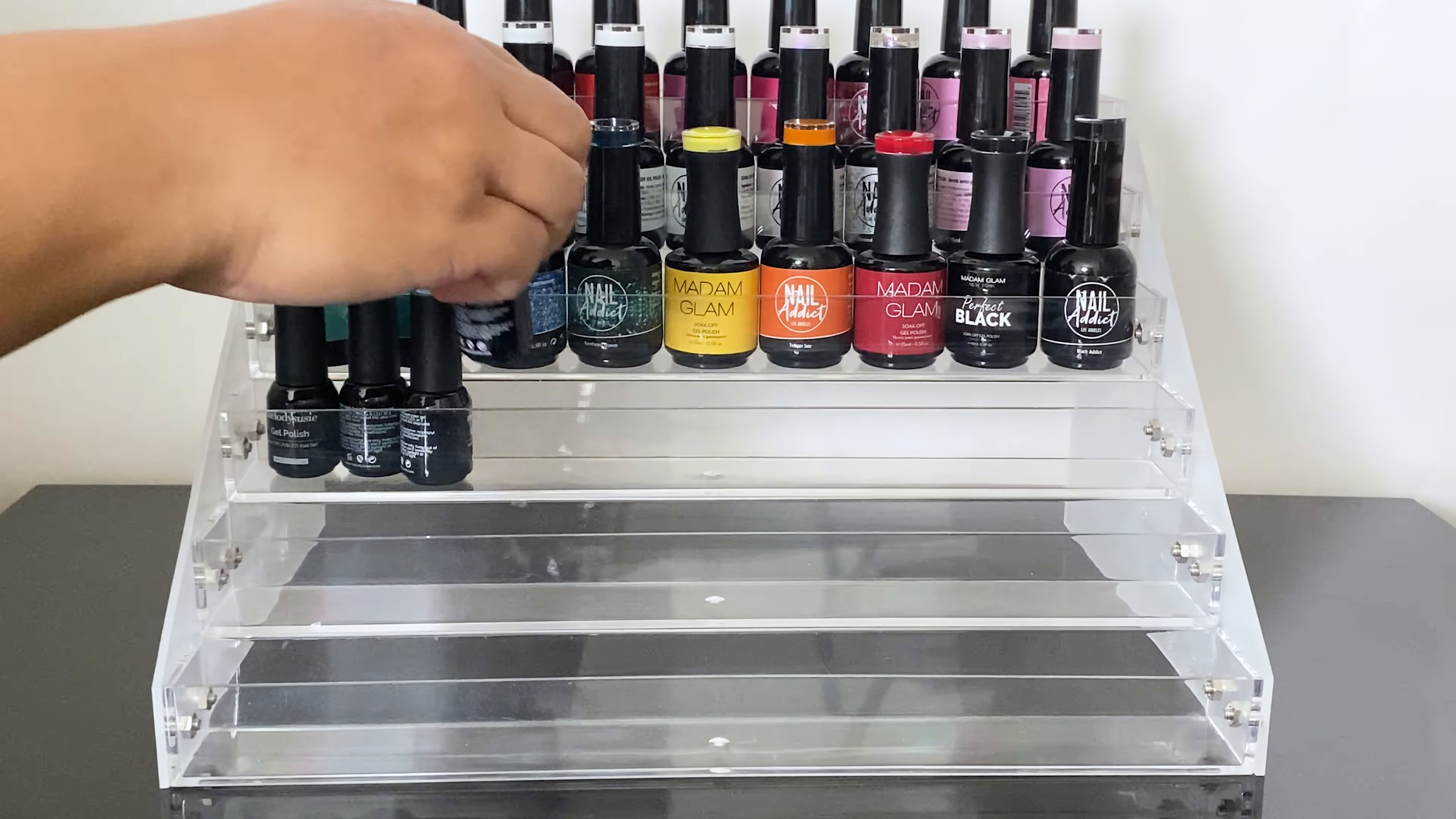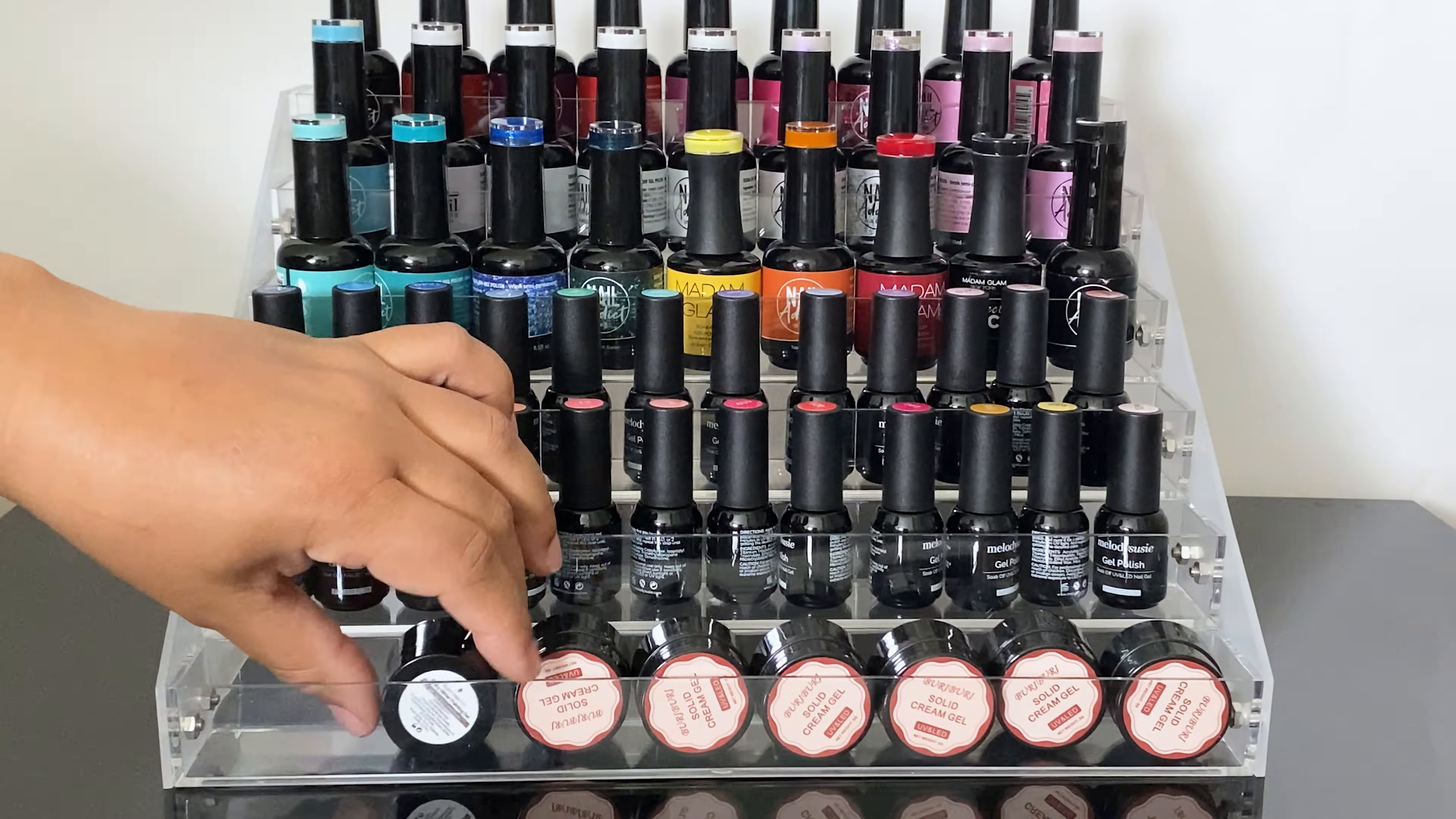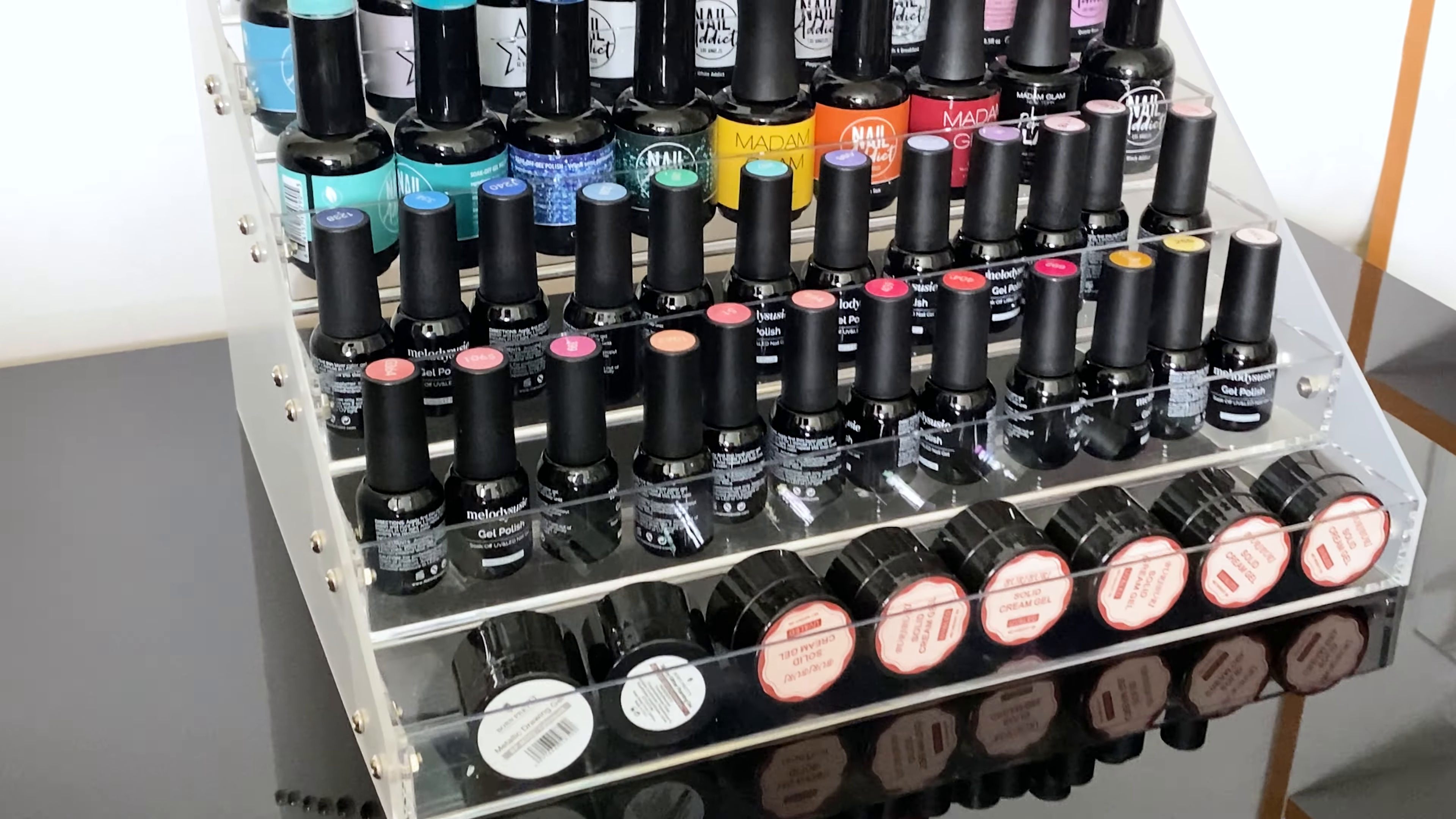Now when I read the description on Amazon it said this organizer can hold up to 72 bottles. Now that is dependent upon the bottle size. So my nail reserve bottles are really big. They're not your average size. So your average size of polish bottles are 7.5 to 8 milliliters.